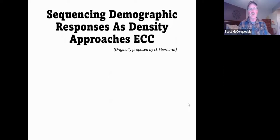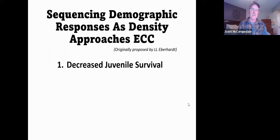Let's shift gears a little bit. Let's talk about what happens with demographic parameters as density approaches ECC. What's going to be on the rest of this slide is an idea that was originally proposed by the late Lee Eberhardt, who was a world-class ecologist. The first thing you'd expect to see as you get stronger and stronger density dependence effects is that juvenile survival is going to decline, usually during the winter.